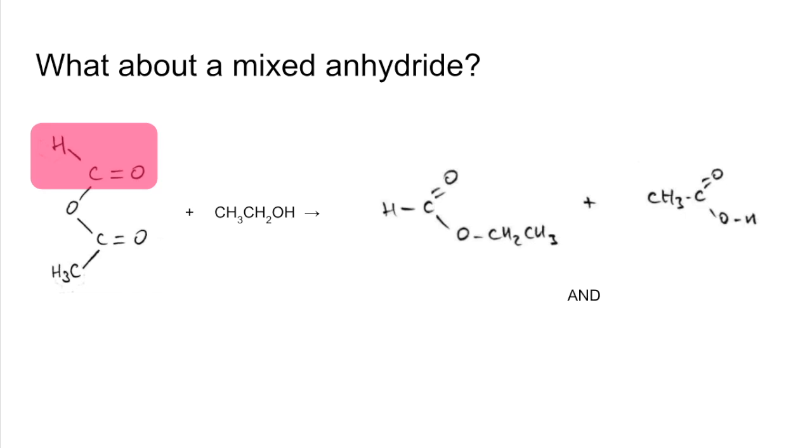So for the second combination we're going to take this acyl group for our ester and obviously combine it with the alkyl group from the alcohol. So we're going to get these two substances, so now we're getting ethyl ethanoate and methanoic acid.